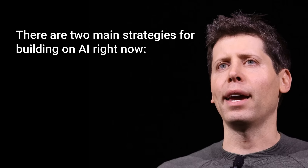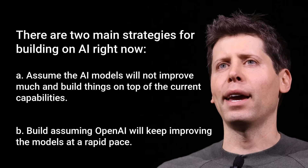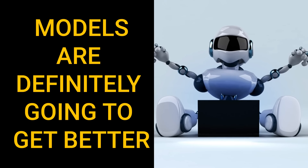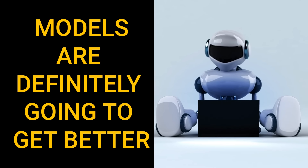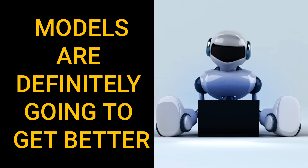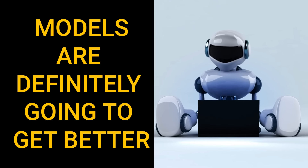Recently, Sam Altman said — paraphrasing — that there are two main strategies for building on AI right now. Assume the models will not improve much and build on current capabilities, which he said will get you steamrolled by OpenAI. Or build assuming OpenAI will keep improving models at a rapid pace. I think there's a middle ground — a third option: yes, the models are definitely going to get better, we're going to see new GPT models, new Gemini models, new Claude models. But even with those models getting better, we have to ship products with what we've got now, and we have to find new ways to do things with what we've got.